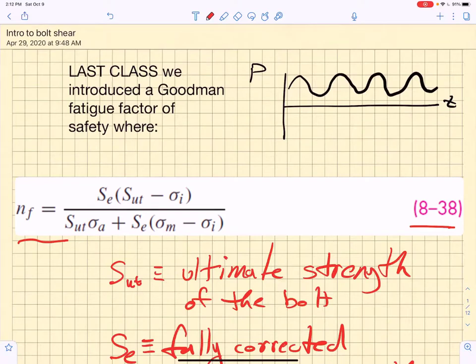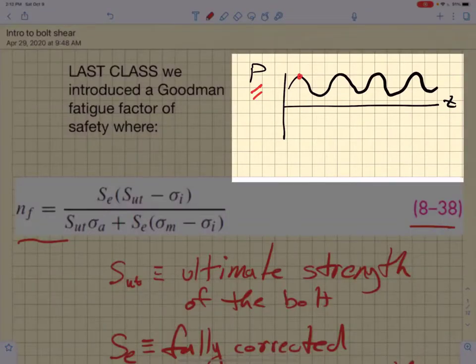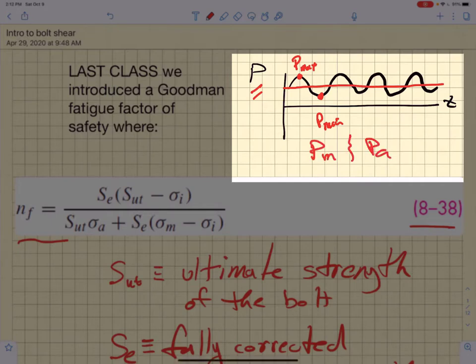This fatigue factor of safety is for the case of general loading, where our fluctuating load applied to the member varies from some maximum value to some minimum value. So it is easy for us to determine both the mean load, PM, and the load amplitude and convert those things to stresses.